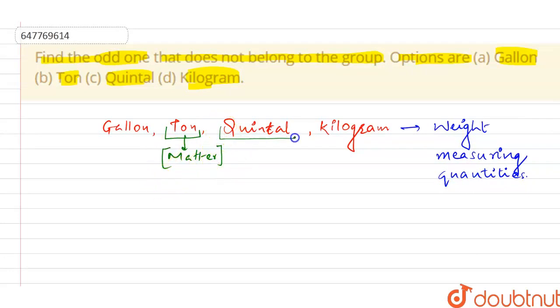Matter forms: solid, liquid and gas, right? So here is the total of three quantities. If you talk about ton, quintal, and kilogram, these three cover all matter forms.